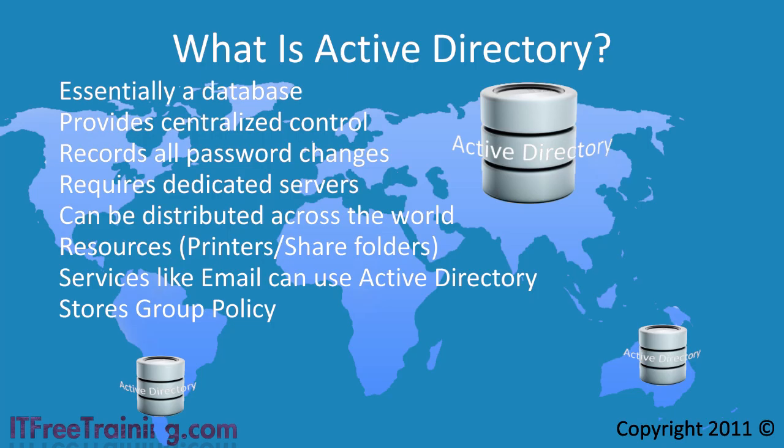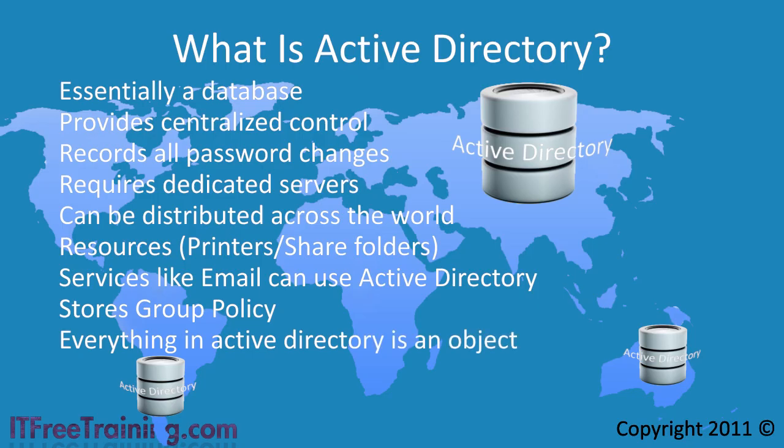Group Policy allows you to make centralized changes to computers on your network quickly and easily. There may seem to be a lot to Active Directory already, but just remember that Active Directory is a database. Everything in the Active Directory database is an object — whether it is a user account, Group Policy, or a printer. Active Directory is essentially a database that holds objects.